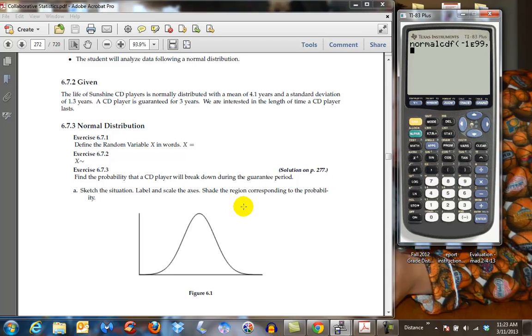Now we need to put in the upper bound and in this case the upper bound is going to be three because that is when our guarantee expires. Then we have to put in our mean and our standard deviation. So in this case our mean is 4.1 years, 4.1 and our standard deviation is 1.3. And so we have all of our pieces in and we hit enter. This will tell us that there is a 20% chance of the CD failing within the three year period.